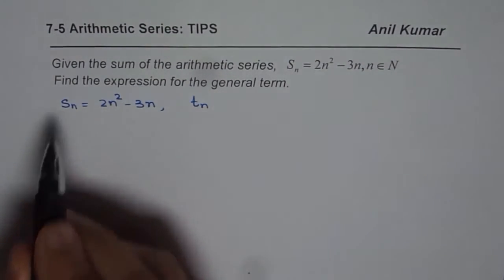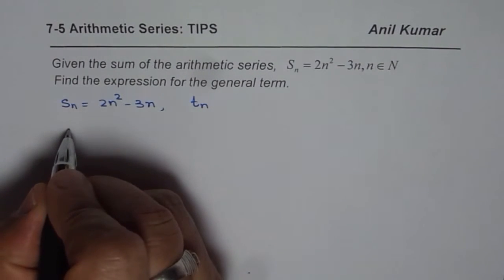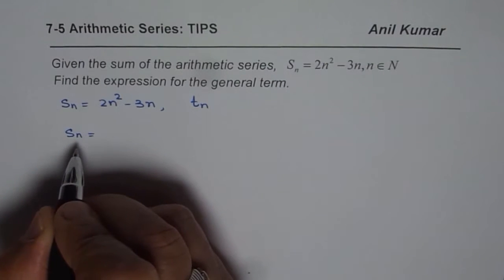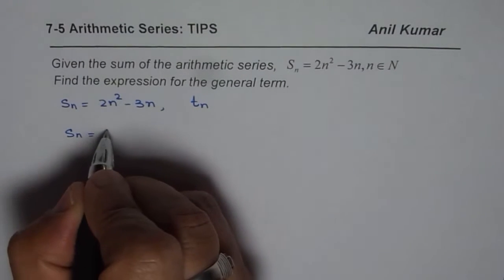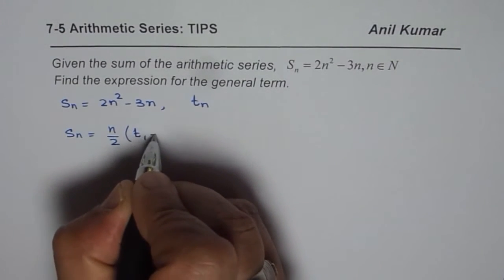Now S_n is related with t_n by the relation that S_n, sum of n terms of an arithmetic series, is equal to n over 2 times t_1 plus t_n.